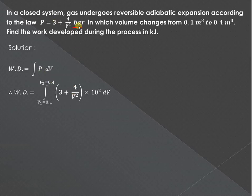Pressure is given by 3 plus 4 upon V square, but that is in bar. Convert this value to kilopascal, so multiply this by 10 raised to 2 into dV. Take this constant outside. Now integration of 3 dV is 3V. Integration of 1 upon V square is minus 1 upon V, so this value will be minus 4 upon V.